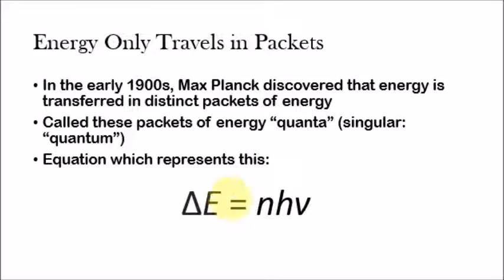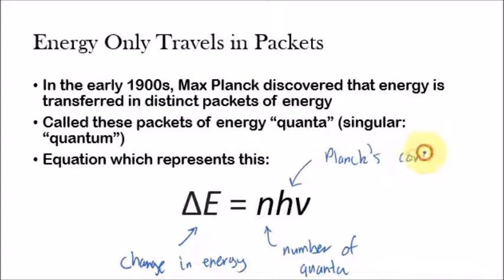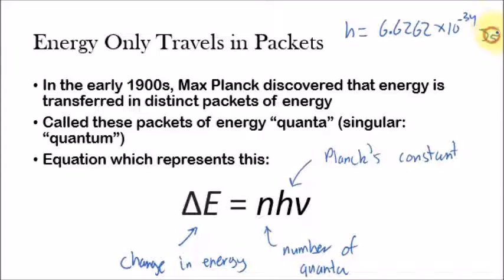The equation that represents this is: delta E — change in energy — equals N times H times nu. N is the number of quanta, and the singular form of quanta is quantum. N is an integer value because energy comes in packets — it's like 1, 2, 3, 4 — you know. H is called Planck's constant, and Planck's constant is 6.6262 times 10 to the minus 34 joules times seconds.